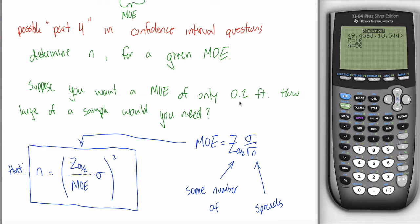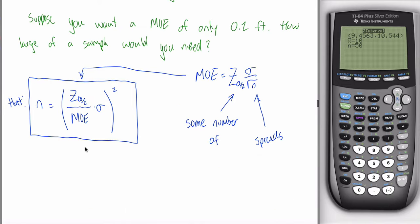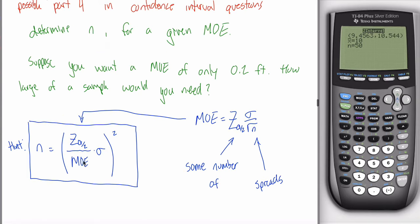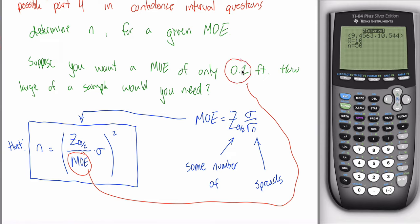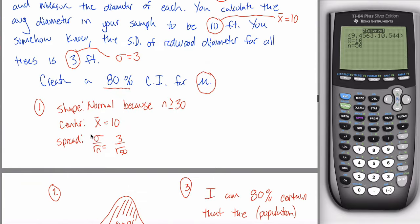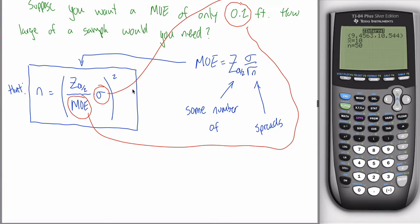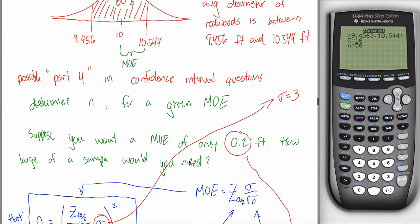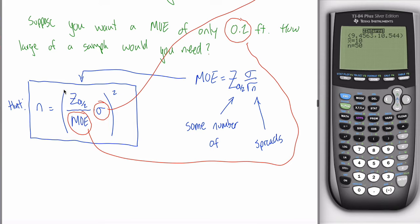It's not as bad as you'd think — there are only three numbers. Margin of error is one, and it's always given to you in the problem: here it's 0.2. Sigma was also given to you in the problem — we can find it from earlier. Sigma was equal to 3 in this problem. So that's two numbers. If you could just figure out the Z_(α/2) value, you'd be done.